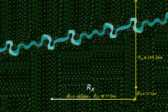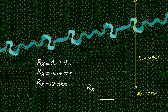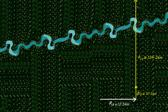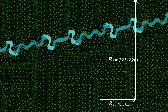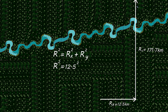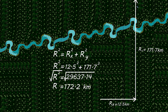Adding components: Rx = d1x + d2x = −65 + 77.5 = 12.5 km. Ry = d1y + d2y = 37.5 + 134.2 = 171.7 km. Applying the Pythagorean theorem: R² = 12.5² + 171.7² = 29,637.14. So R = √29,637.14 = 172.2 km.